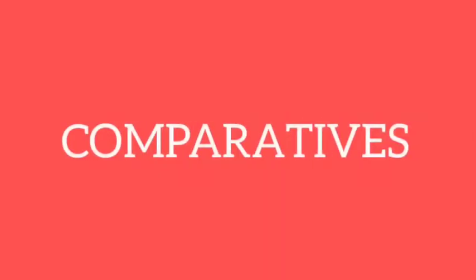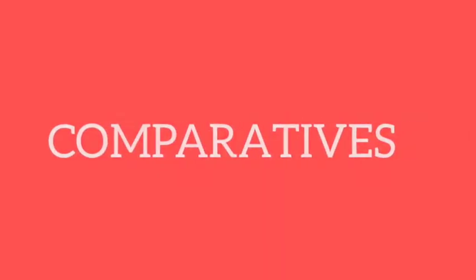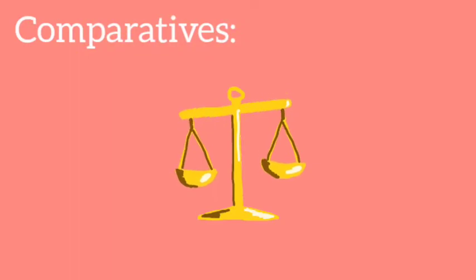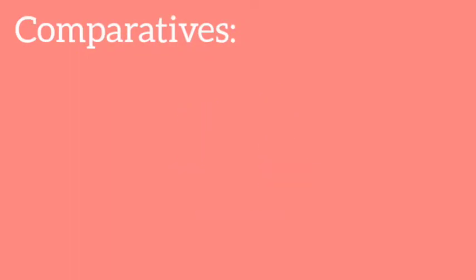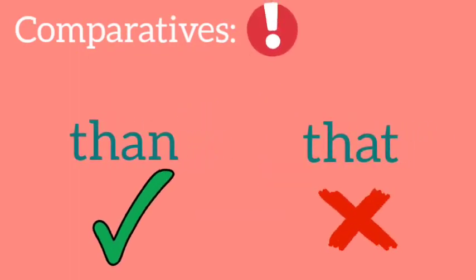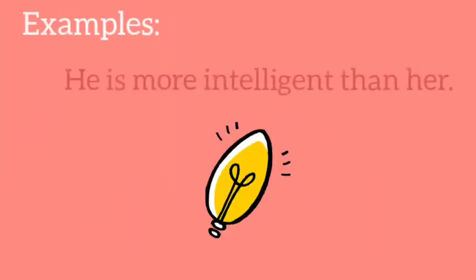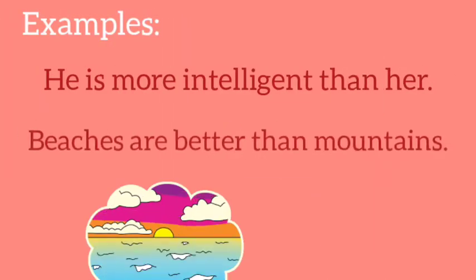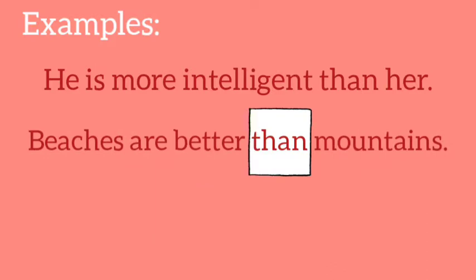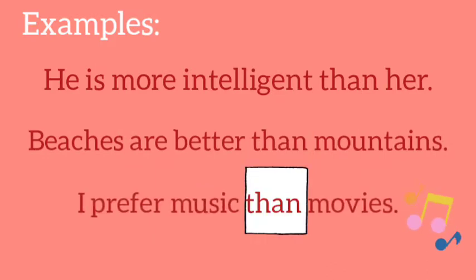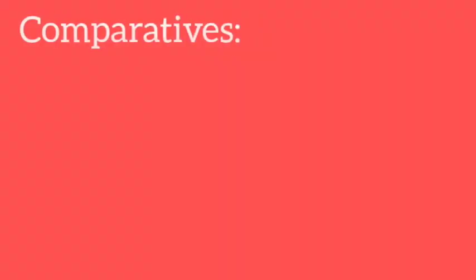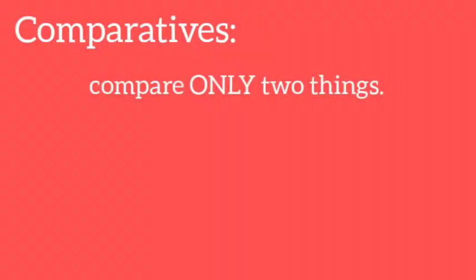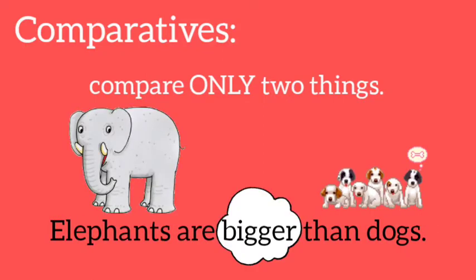Let's start with comparatives. Every time you compare in English, we must always use 'than' instead of 'that.' For example: he is more intelligent than her; beaches are better than mountains; I prefer music to movies. Comparatives are adjectives that compare only two things. For example, elephants are bigger than dogs.